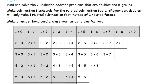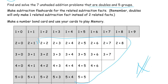Find and solve the seven unshaded addition problems that are doubles and five groups. So we're looking at these unshaded ones. Some of these are doubles and some of them are five groups, but not all of them. So which ones are we talking about?